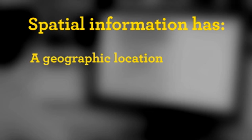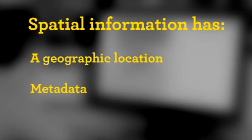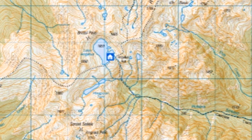Spatial information has two components: a geographic location — that is, a definite place that can be identified using coordinates — and the information or metadata attached to this place. For example, we can see that there is a hut located at this particular set of coordinates.